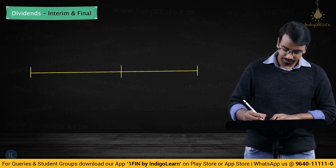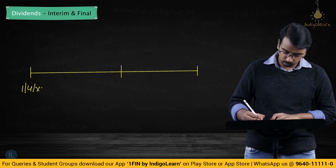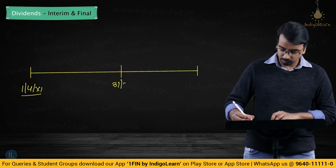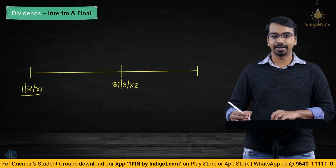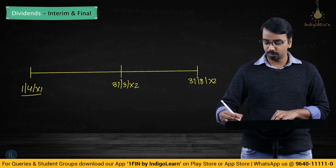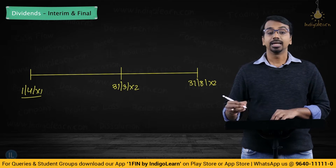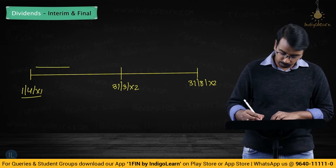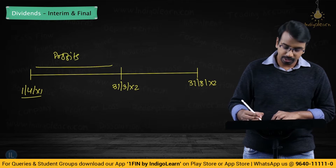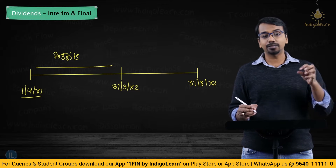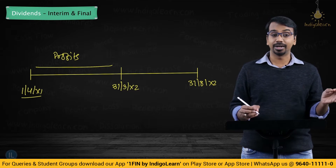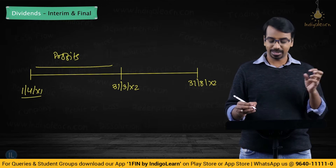Let's take an example. Let's say on 1st of April of year 1, this is the financial year beginning. On 31st of March of year 2, the financial year ends. In August you have the shareholders meeting. Generally what happens is for the profits which are earned in this period, out of that profit a specific amount is paid as dividend.